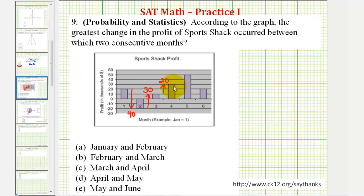From the fourth month to the fifth month, profits went from thirty thousand to fifty thousand, another increase of twenty thousand.